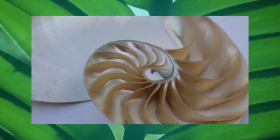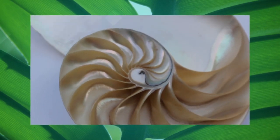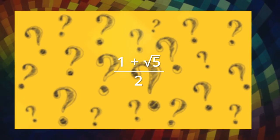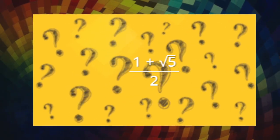So what is it exactly? It is arguably the most irrational number in the world. Its formula is 1 plus the square root of 5 divided by 2, and it is often represented by this symbol, the lowercase Greek letter phi.